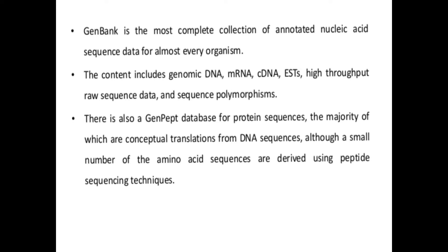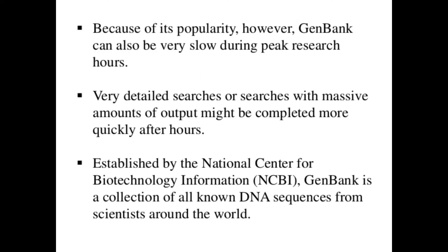GenBank is the most complete collection of annotated nucleic acid sequence data for almost every organism. The content includes genomic DNA, mRNA, cDNA, ESTs, high-throughput raw sequence data, and sequence polymorphisms. There is also a GenPept database for protein sequences, the majority of which are conceptual translations from DNA sequences, although a small number of amino acid sequences are derived using peptide sequencing techniques. Because of its popularity, GenBank can also be very slow during peak research hours, and detailed searches with massive output might be completed more quickly after hours.